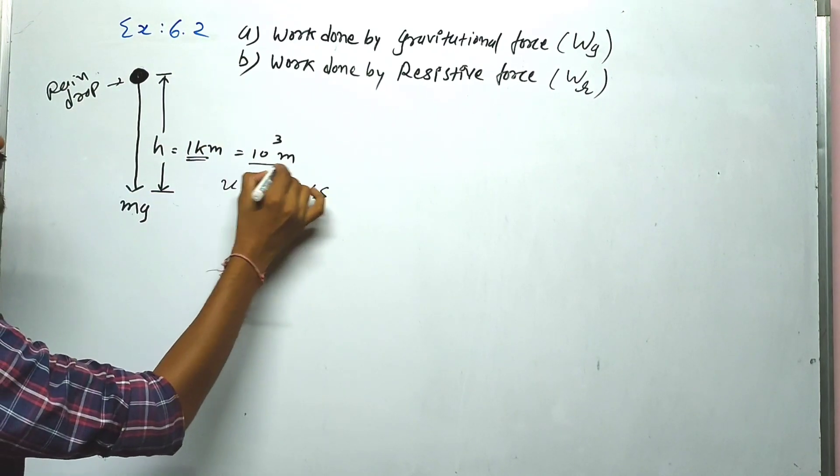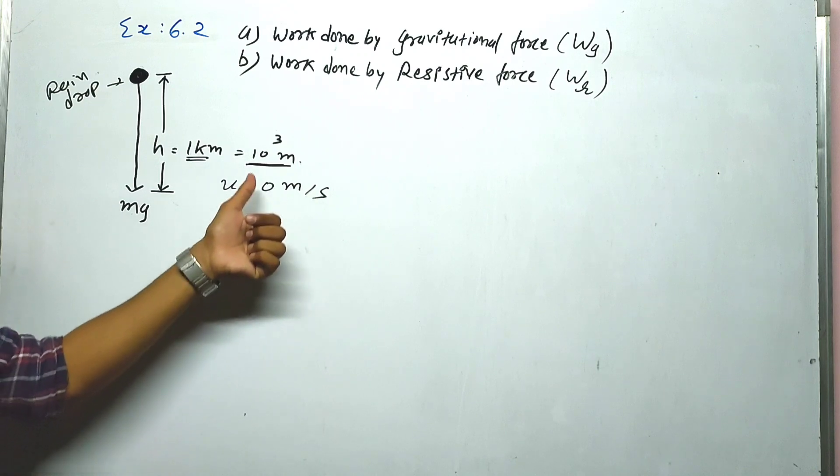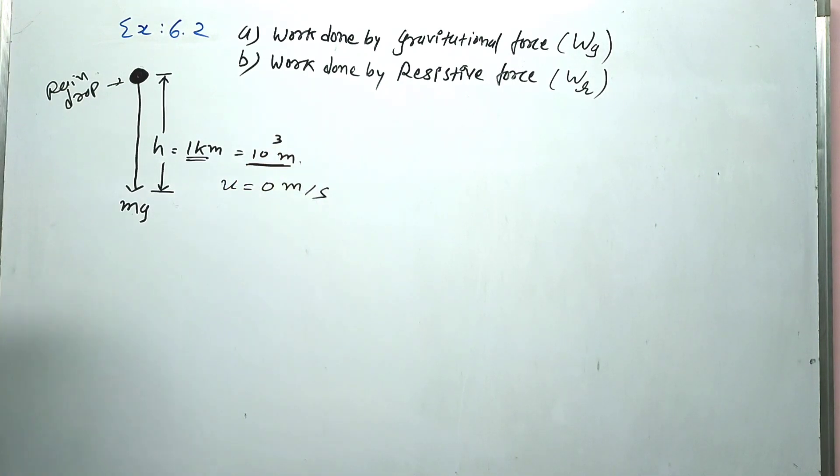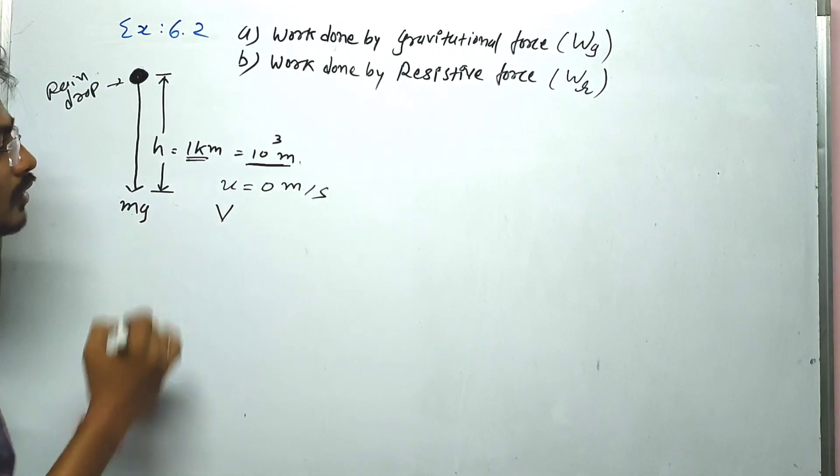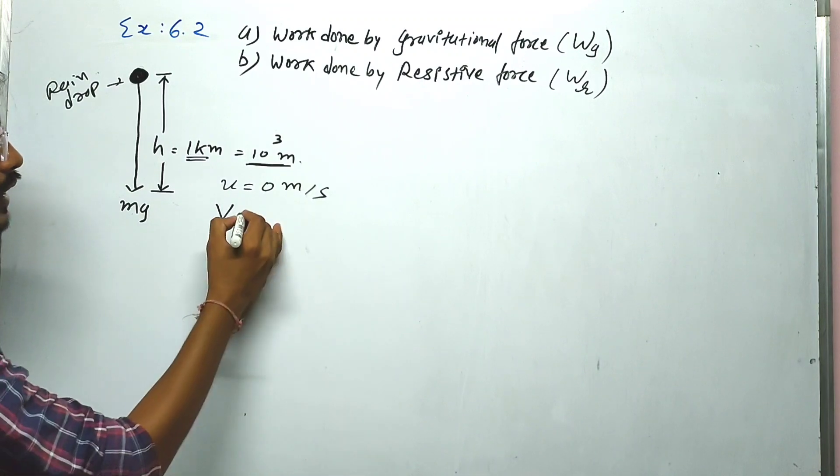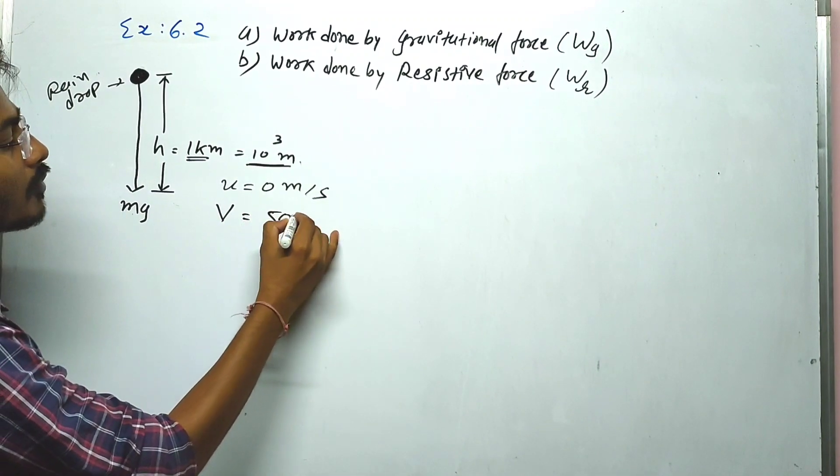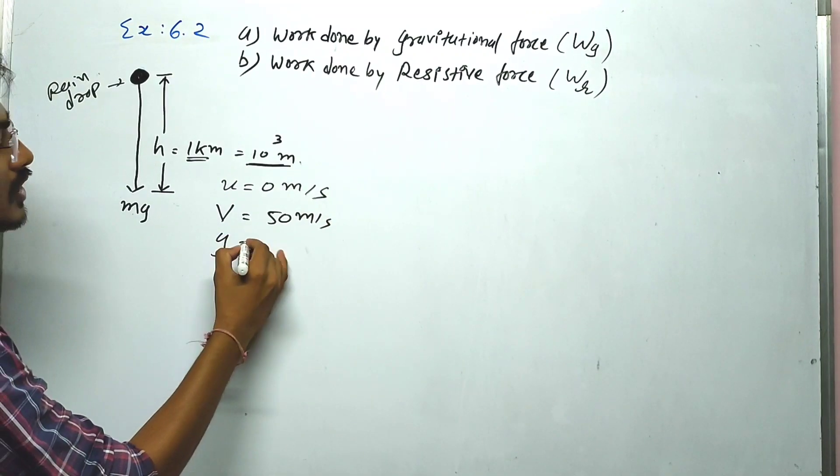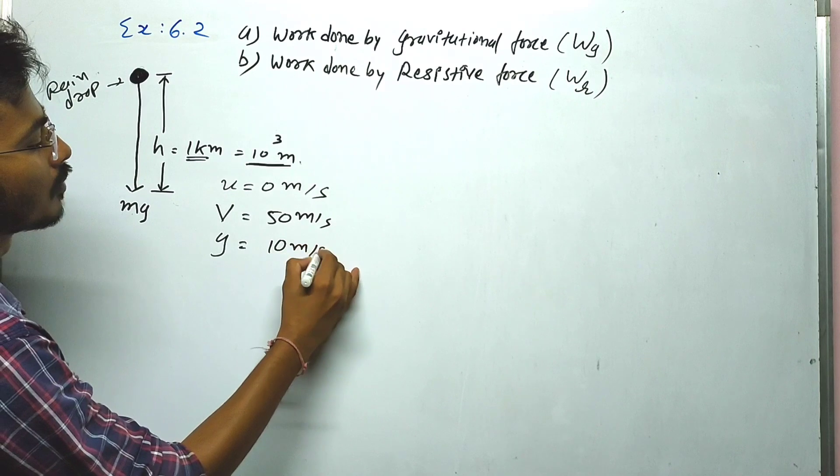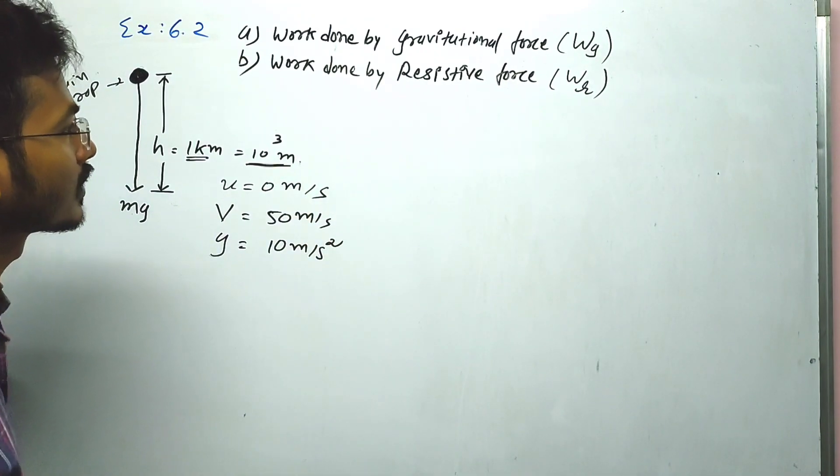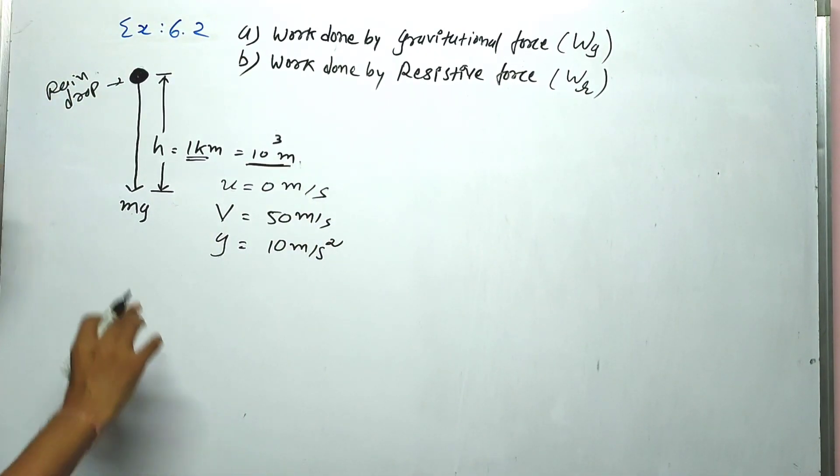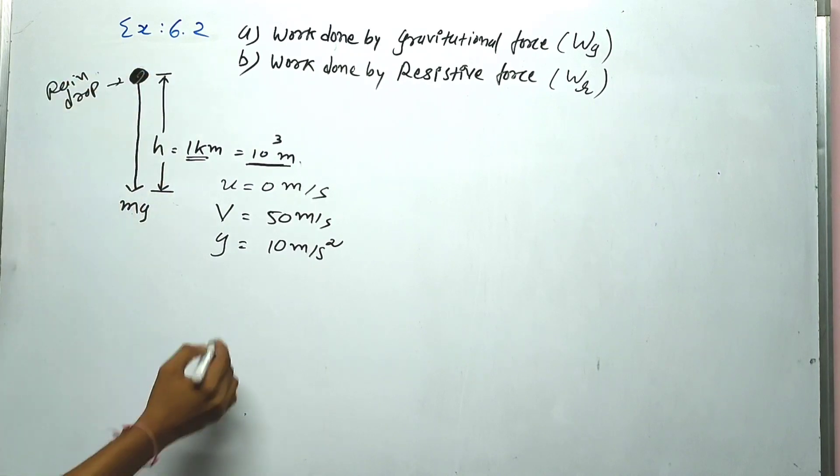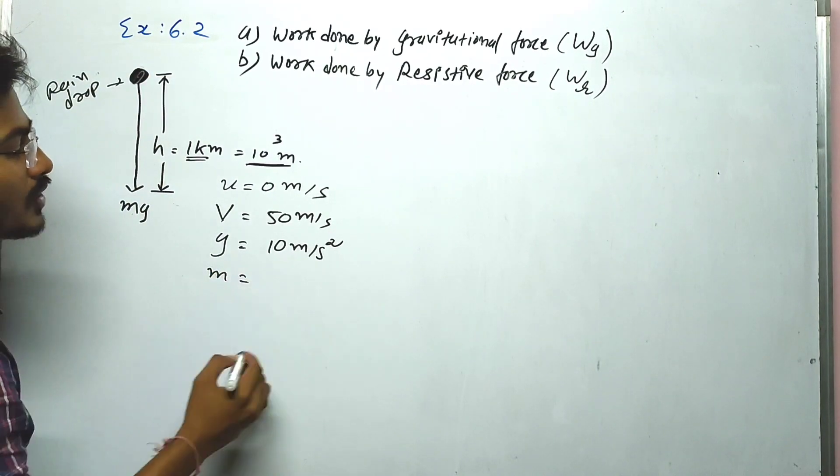1 kilometer we have to convert to meters, which is 10 raised to 3 meters. Initial velocity is 0 meters per second. Value of g we consider 10 meters per second squared, and mass m is equal to 1 gram.